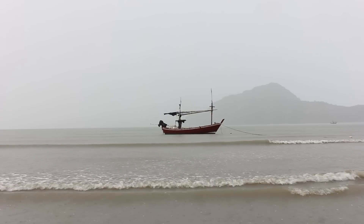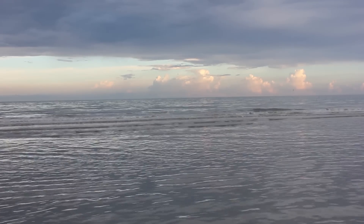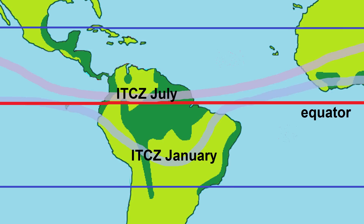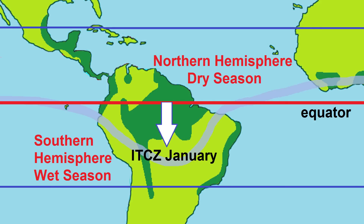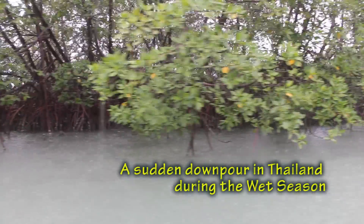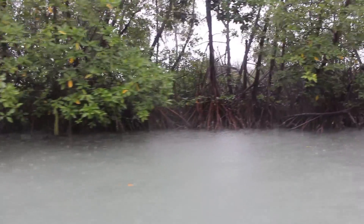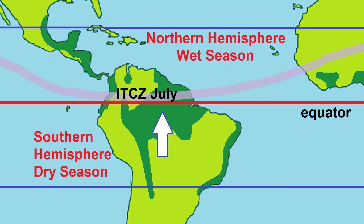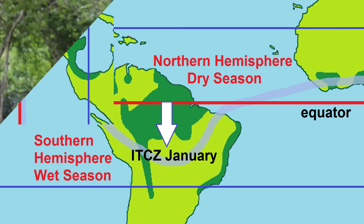These storms are often heavy but are over relatively quickly. The position of the ITCZ changes seasonally — it moves north in the northern hemisphere summer and south in the northern hemisphere winter. This is what is responsible for the wet and dry seasons in tropical regions. In the northern hemisphere, the wet season occurs from May to July; in the southern hemisphere, from November to February.